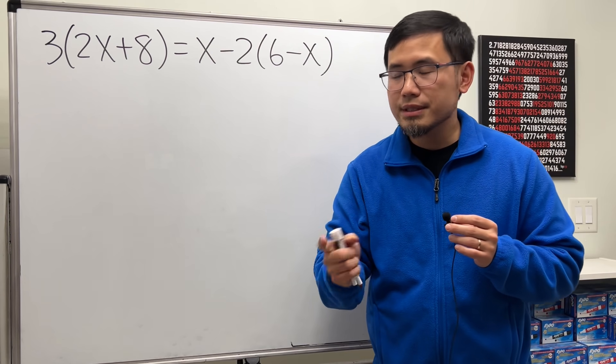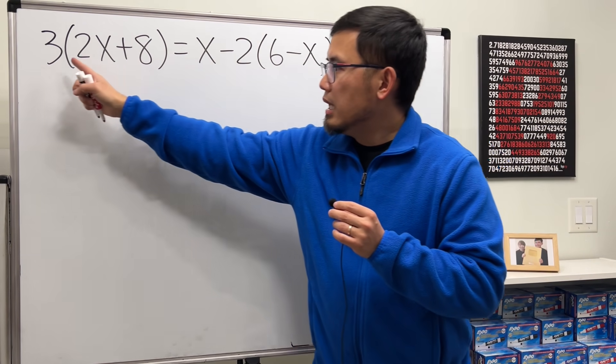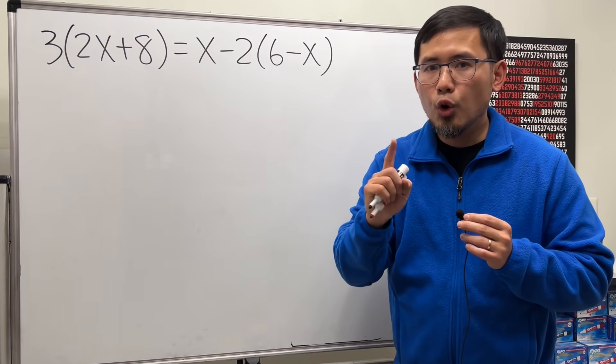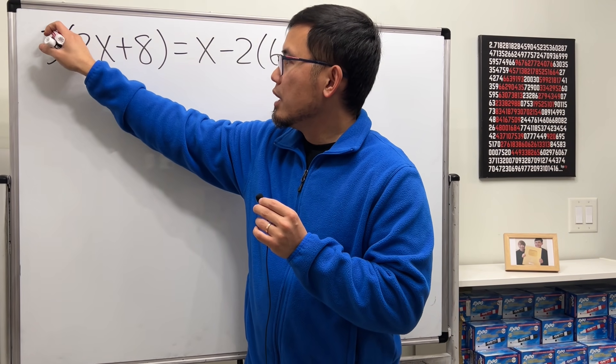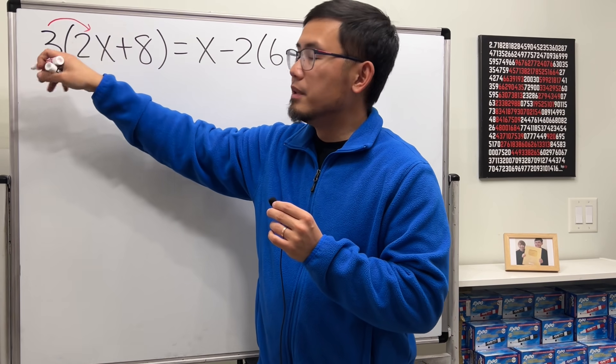First thing first, whenever we have parenthesis and we have numbers in front, always distribute first. Right here, we have the 3. We are going to take the 3, distribute in.